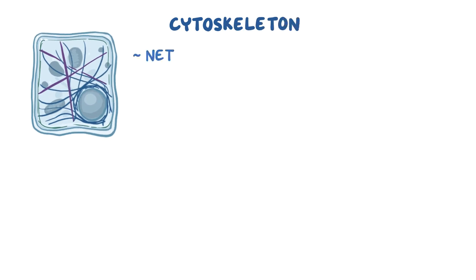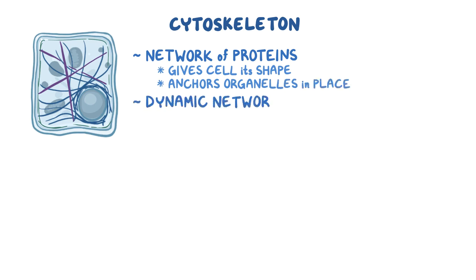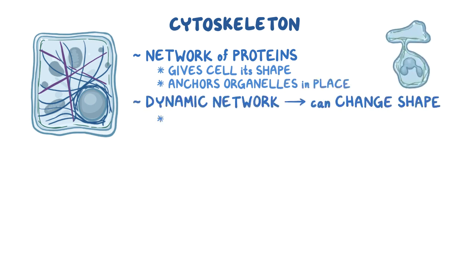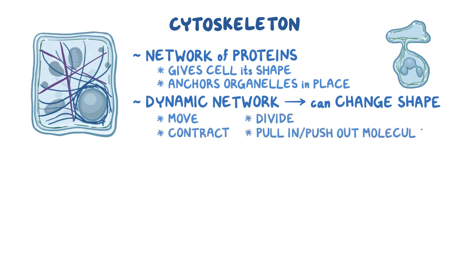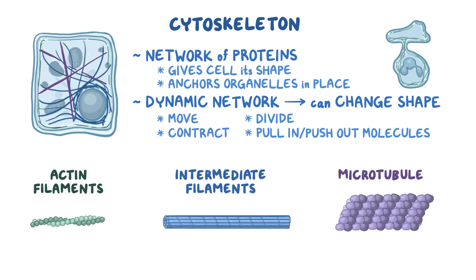First things first, the cytoskeleton is a network of proteins within the cell that gives each cell its shape. It anchors organelles in place, but it's also a dynamic network which can change shape when the cell wants to move, contract, divide, or pull in or push out molecules. It's made up of three proteins: actin filaments, intermediate filaments, and microtubules.